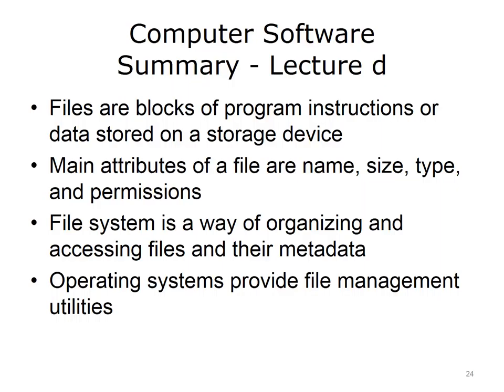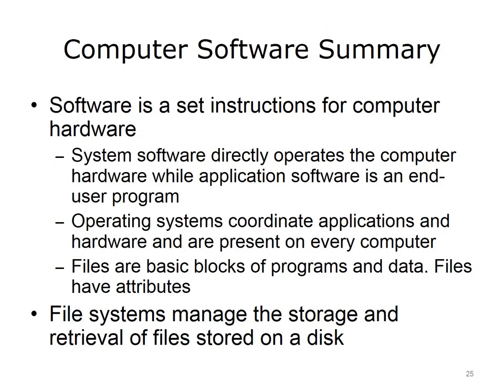This concludes Lecture D of the unit on Computer Software. This lecture defined computer files and described different file types and attributes. It defined and explained the role of the file system, provided an overview of file management utilities and file systems, and provided file management tips. This also concludes the unit titled Computer Software. This unit defined software and explained two major software types, application software and system software. Application software is an end-user program. System software directly operates the computer hardware. Applications include software tailored for business, multimedia, science, mathematics, communication, and healthcare, to name a few. Operating systems coordinate the applications and the hardware — they are the interface between the applications that the users run and the physical computer hardware. Operating systems are present on every computer. Files are basic blocks of programs and data. Files have attributes. File systems work with operating systems to manage the storage and retrieval of files stored on a disk.